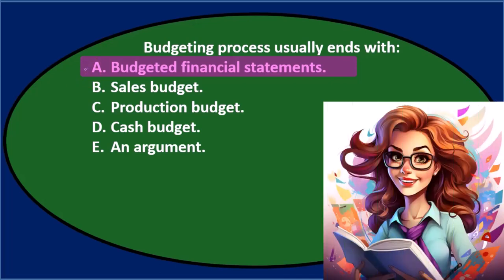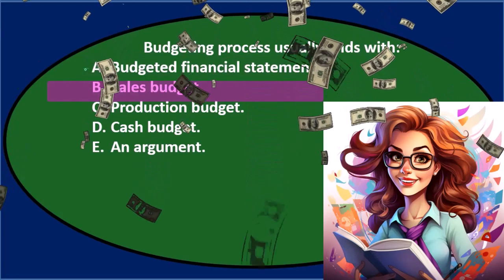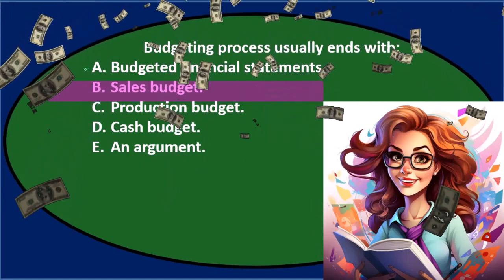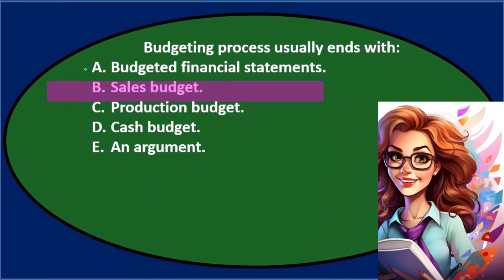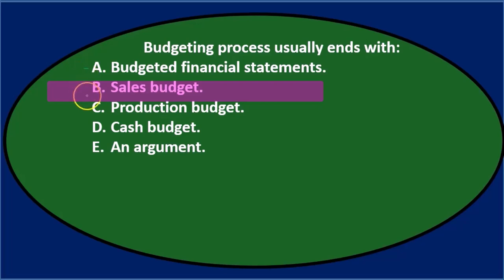B says the sales budget. Now the sales budget's got to be one of the first things we do because we can't do much else until we figure out how many units we're going to sell—you can't budget too many other things until you know that. So I would think that would be somewhere towards the beginning of the process.